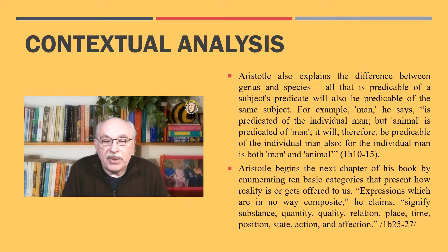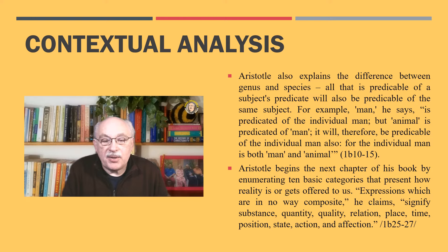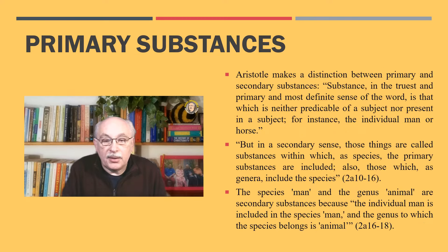Aristotle begins the next chapter by enumerating ten basic categories that present how reality is offered to us. I quote, 'Expressions which are in no way composite signify substance, quantity, quality, relation, place, time, position, state, action, and affection.' Explaining their meaning by giving illustrations for each category, he mentions among others some examples of substance, which are man or horse.